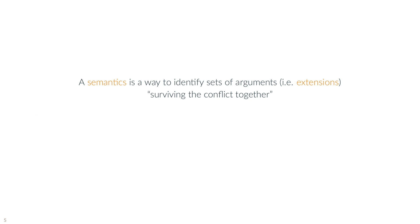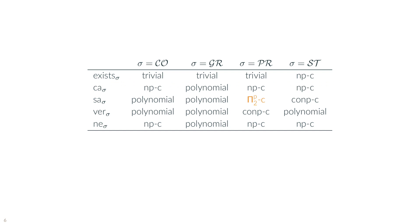There are many ways this can happen, and each way is encoded in a recipe that takes the name of a semantics. Across the years, many semantics have been proposed. In the slides, we have considered just the four traditional semantics introduced in the seminal paper of Dung, namely the complete, the grounded, the preferred and the stable semantics.